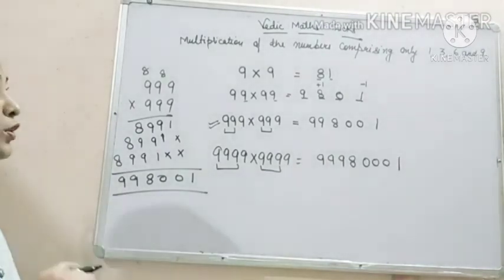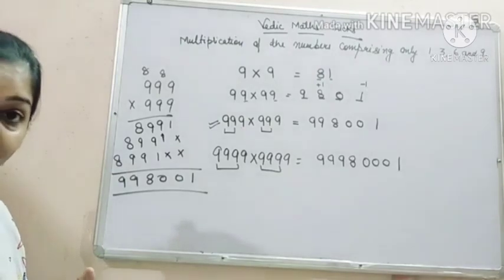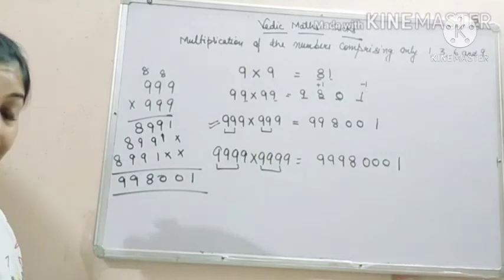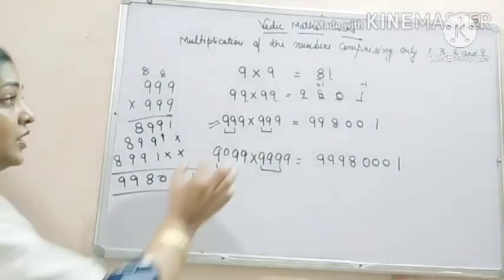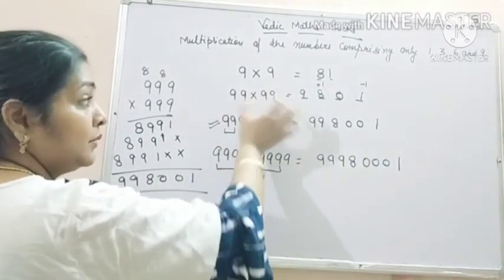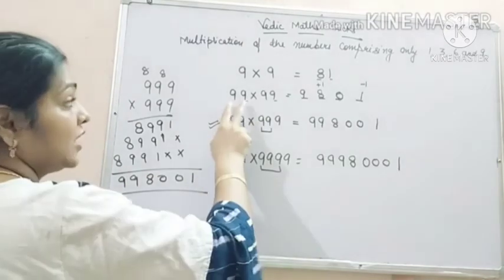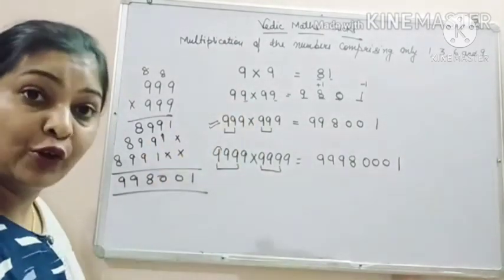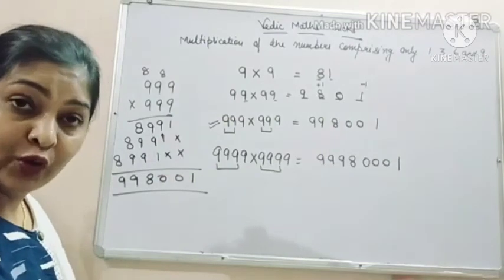So now it is clear how to multiply the numbers comprising only of 1, 3, 6 and 9. But what we have done? We have taken same numbers. Either we have multiplied 2 nines with 2 nines, 3 nines with 3 nines, 4 nines with 4 nines.